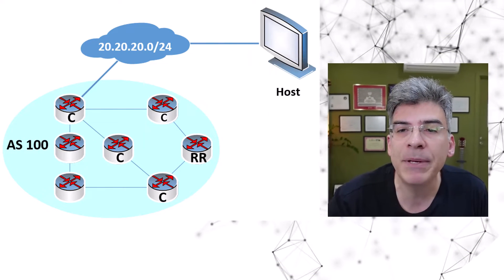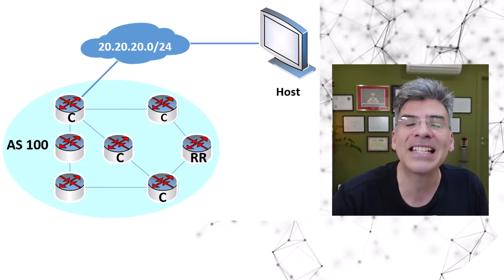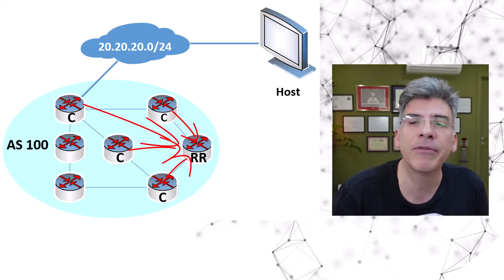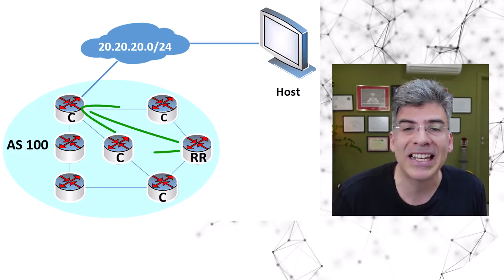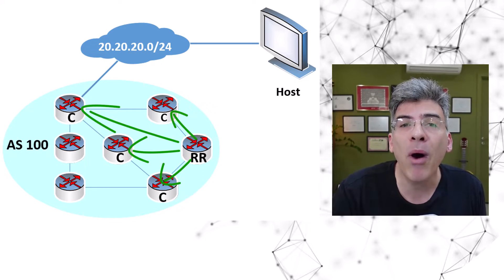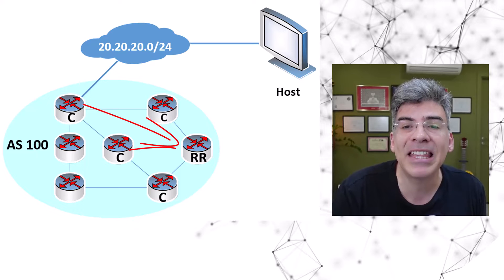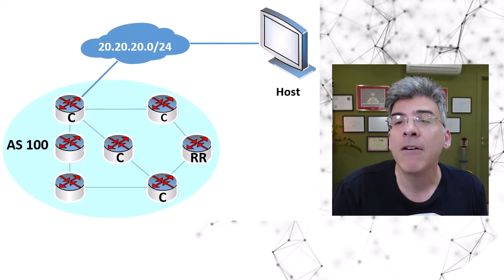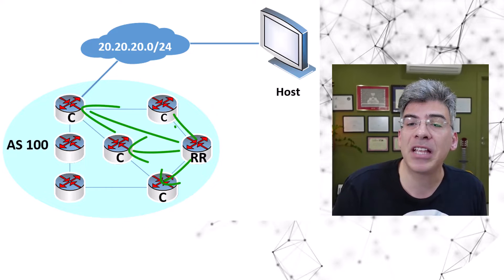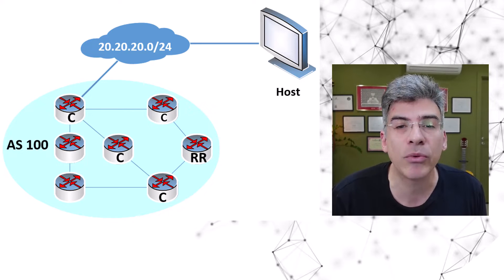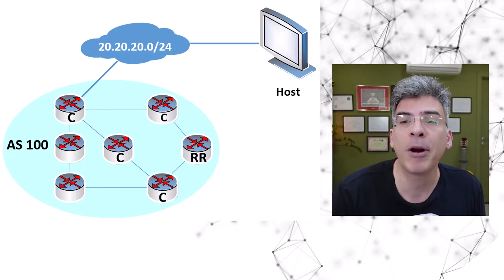Route reflectors are used to alleviate this limitation. A route reflector is a BGP router that has been configured to act as a centralized hub which collects and redistributes, or reflects, routing information among other IBGP routers in the same autonomous system without requiring them to maintain that full mesh of peerings to each other. For those of you that have studied OSPF, a route reflector is something similar in logic to a designated router, or DR, for a particular network segment. The idea is similar, but the implementation is quite different.